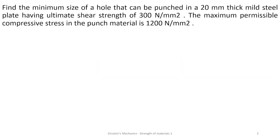The problem says: find the minimum size of a hole that can be punched in a 20 mm thick mild steel plate, having an ultimate shear strength of 300 newton per millimeter square. The maximum permissible compressive stress in the punch material is also 1200 newton per millimeter square.